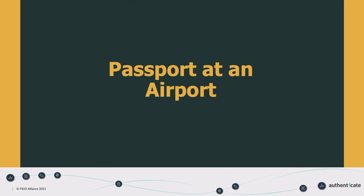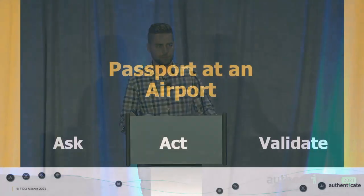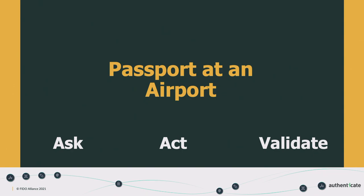You've got your passport, your boarding pass, your little rolly bag, and you wait three and a half hours for the privilege of going through TSA. When you get up to the checkpoint, we're going to do something called an authentication dance — sometimes called an authentication ceremony — and there are three parts to this: ask, act, and validate. The TSA agent wants to make sure that you requesting access should actually have access to that secure space.